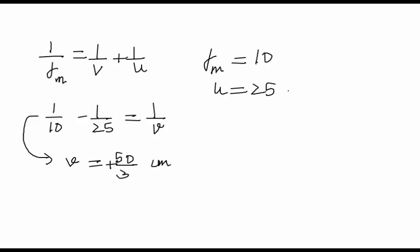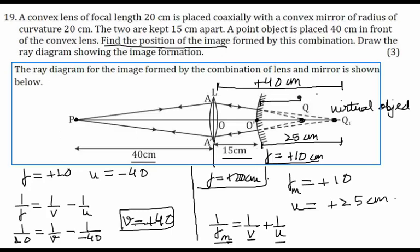Since v is positive, the final image is formed at a distance of 50/3 centimeters behind the convex mirror. For the ray diagram, we draw the lens with the object at 40 centimeters, with rays converging toward the virtual object. After reflection from the diverging mirror, the rays diverge and appear to come from the final image position. This is the technique for drawing such a ray diagram.